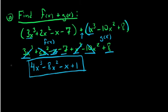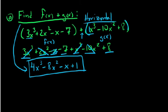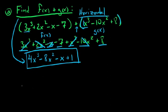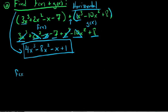So this is f of x plus g of x — that's how to do this in a horizontal fashion. Now, what's the opposite of horizontal? Vertical. So we can actually do the same thing by taking f of x and adding on g of x in a very vertical fashion, like we're kind of used to doing with real numbers.